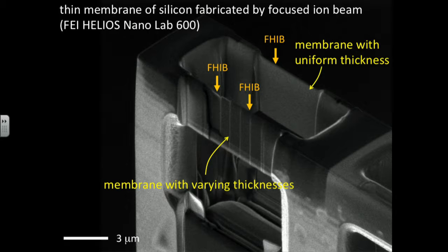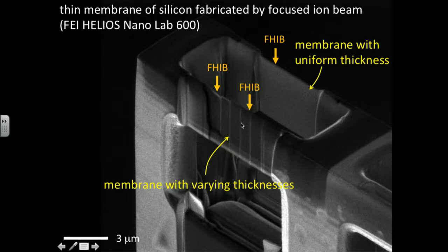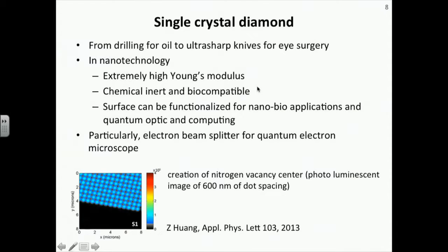This is one example of the experimental platform of the geometry-controlled nanostructure. Using the focused helium ion beam, we can fabricate a uniform thickness membrane, and also a varying thickness membrane, as shown in this figure. We then expose the focused helium ion beam onto the top of the membrane. To study the focused helium ion beam interaction with nanostructure, we used single crystal diamond. Single crystal diamond has been used from drilling to ultra-sharp knives for eye surgery, and even in nanotechnology — it has extremely high elastic modulus, is chemically inert, and biocompatible.